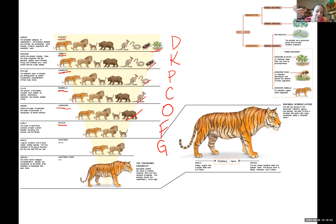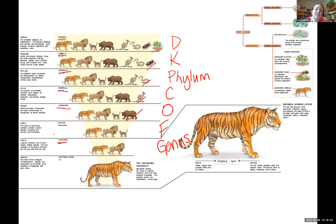Now we're in a category called a genus — spelled G-E-N-U-S, not the same as 'genius.' A genus is the next to smallest group. The specific genus in this example is Panthera, which includes all of the large cats. We lost our domestic kitty cat — even though your house cat is in the same family as a tiger, it's not in the same genus. Genus Panthera includes lions, tigers, and a couple others — I believe leopards are also in there.